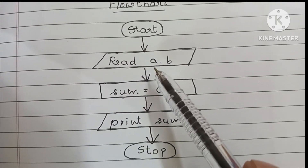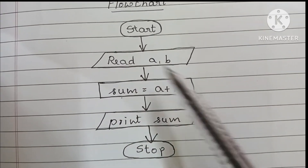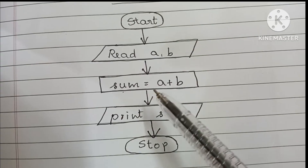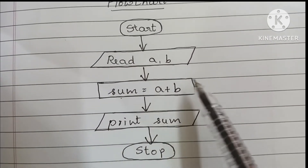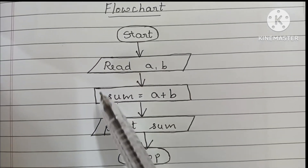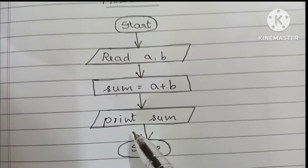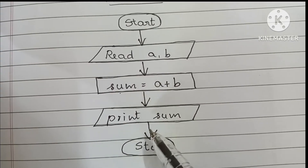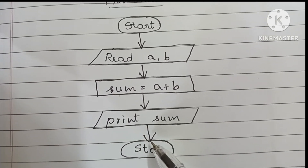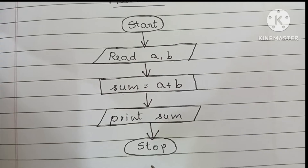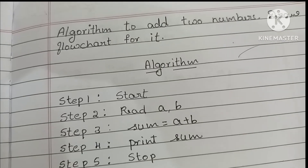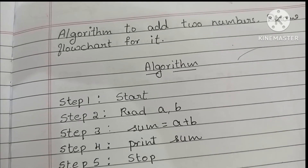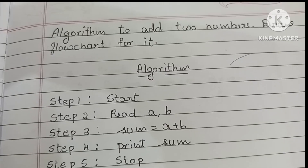We read two variables a and b, written within a parallelogram shape. Next, we calculate sum is equal to a plus b — calculation is always done within a rectangular shape. Next, we print the output — print sum — then stop the flowchart using the stop statement. This is the algorithm and flowchart to find the sum of two numbers.